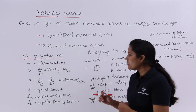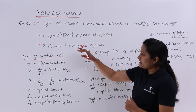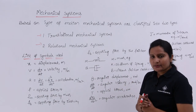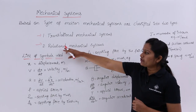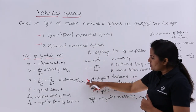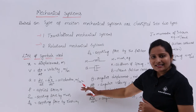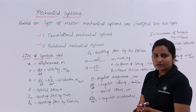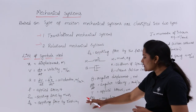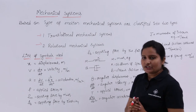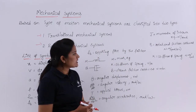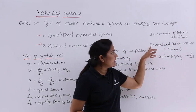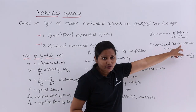Coming to the list of symbols used in the rotational mechanical system: theta is angular displacement in radians; d-theta/dt is angular velocity in radians per second; T is the applied torque in Newton-meter; d²theta/dt² is angular acceleration in radians per second squared; J is the moment of inertia in kg·m² per radian; and B is the rotational frictional coefficient.